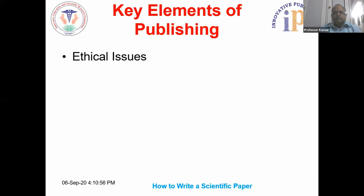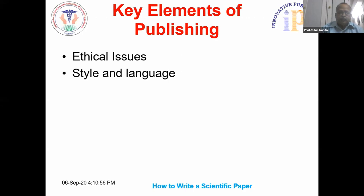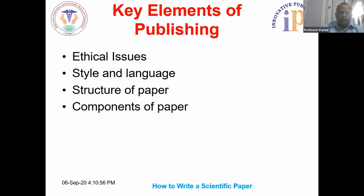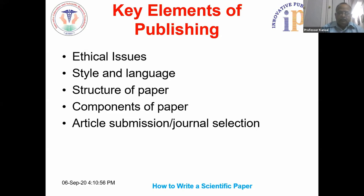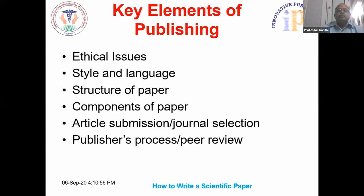There are various main key elements of publishing. First are ethical issues. Then style and language is also important. Then the structure of the paper, the components of the paper, the submission of the articles and selection of the journal, the process at the publisher, and review by peers.